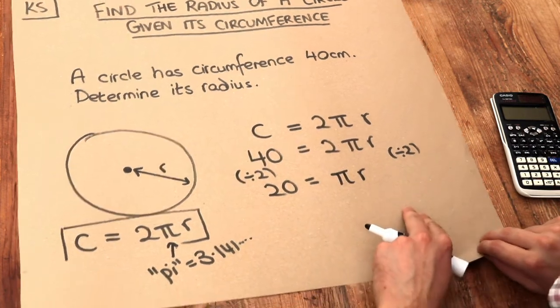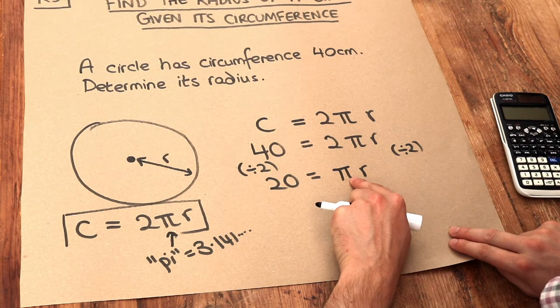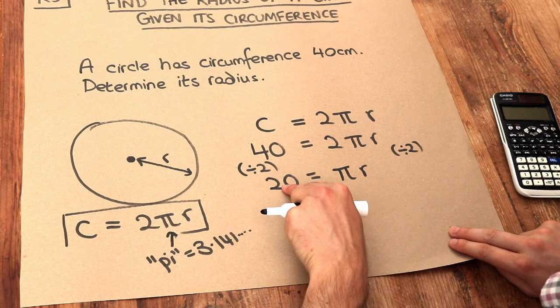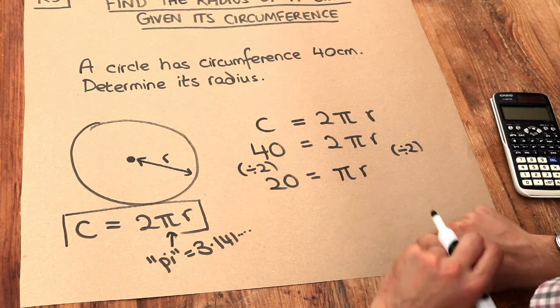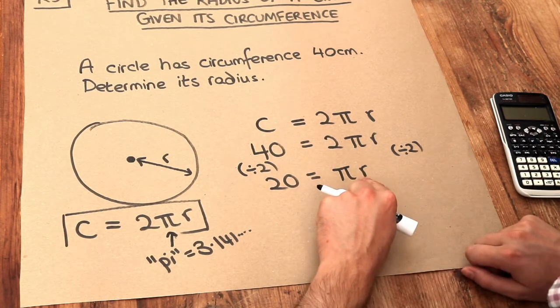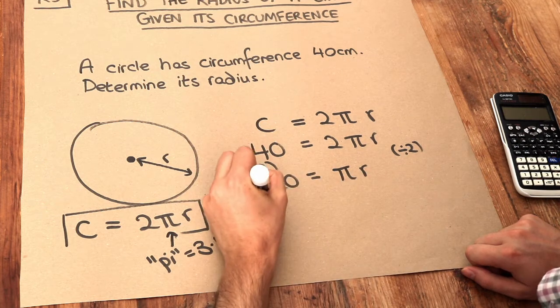And now let's look at what's happening to R. R has been multiplied by π to get to 20. Now to get rid of that multiplied by π, we do the opposite to both sides of the equation. So the opposite of times by π is dividing by π.